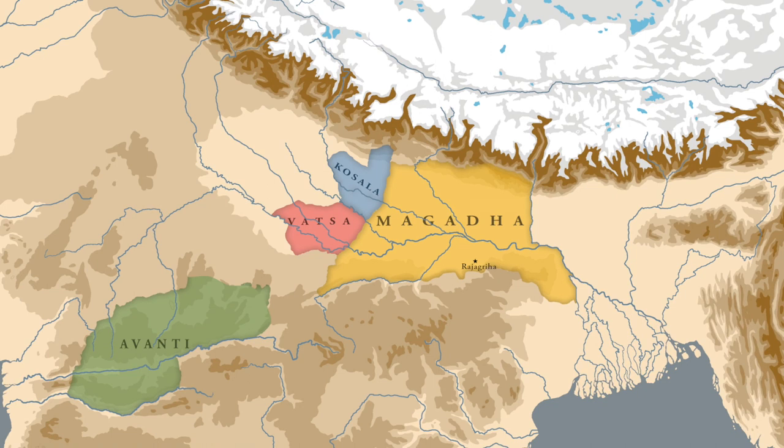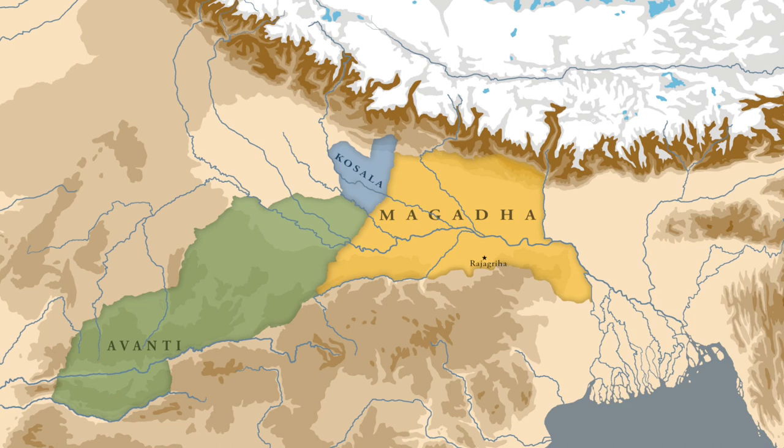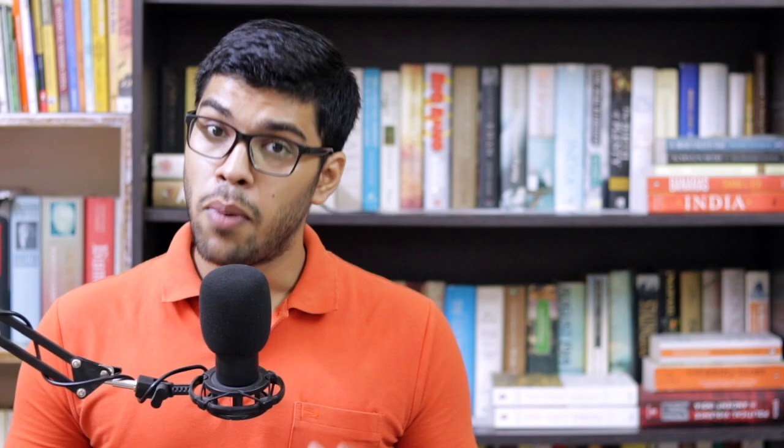During this period of turmoil, Magadha also faced the growing threat from Avanti. Avanti, who was the rival power of Magadha, expanded during this period and conquered the Mahajanapada of Vatsa. Having conquered the Mahajanapada of Vatsa, the Avantian territory now touched the borders of Magadha. The Magadhan people and elite realized that the next target for the Avantian army was Magadha.